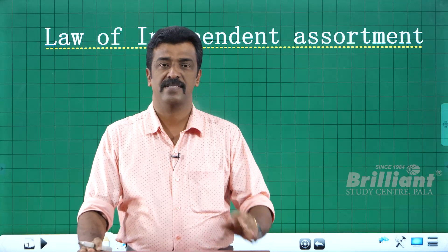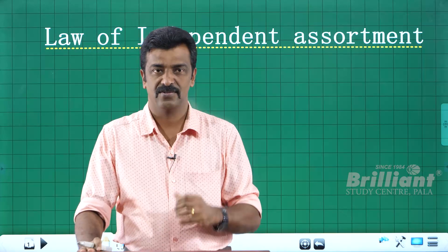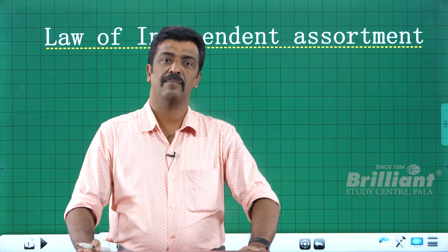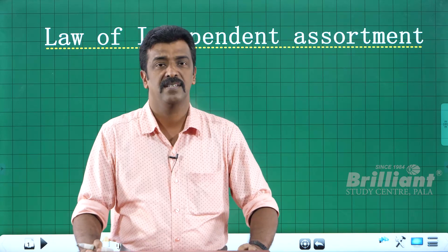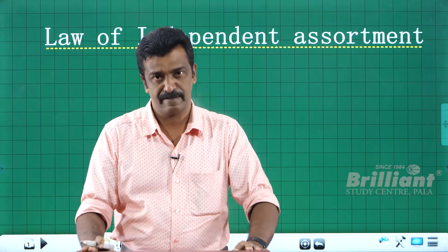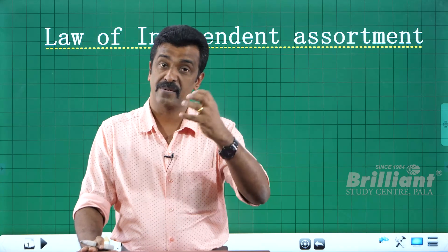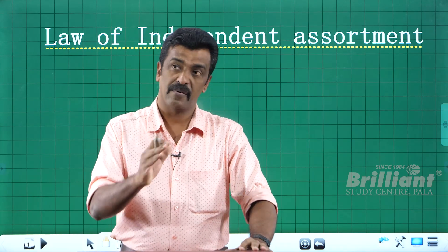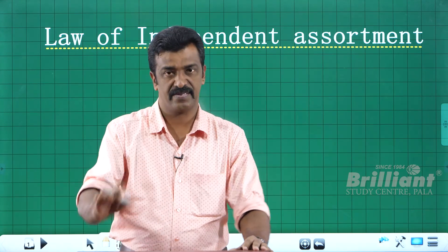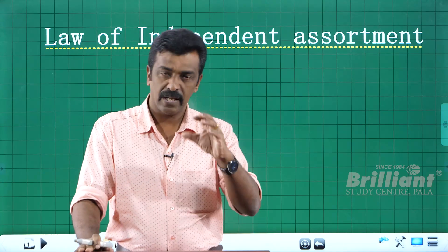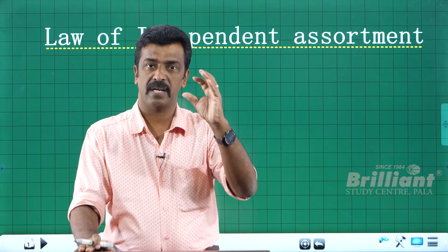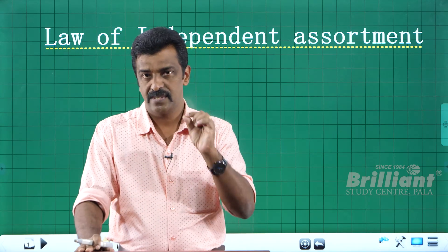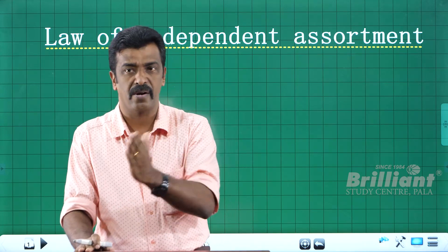Hello. Let us understand the basic ideas hidden and conveyed through the law of independent assortment. I am the father of genetics. Some generalizations in the name of a law — so this law is our observation. Young plants or offspring — there are some variations or differences. This law is our observation, and they have a dihybrid cross performed.